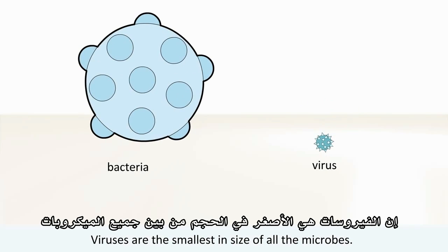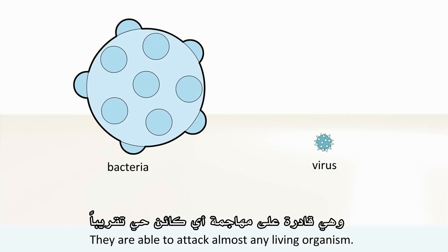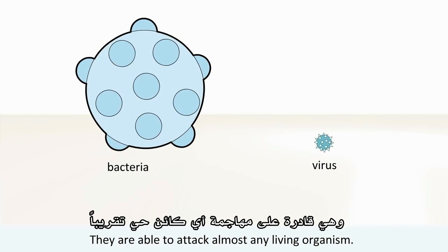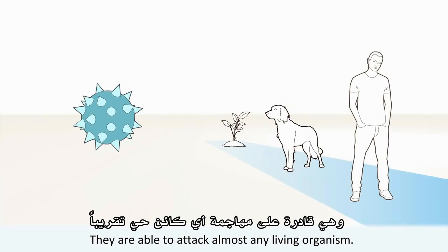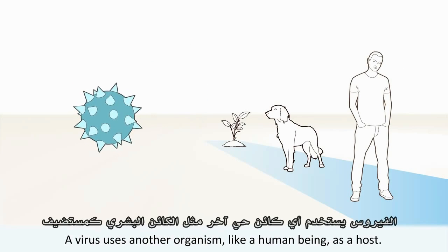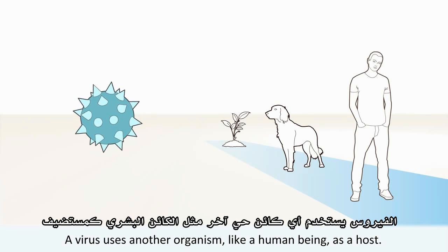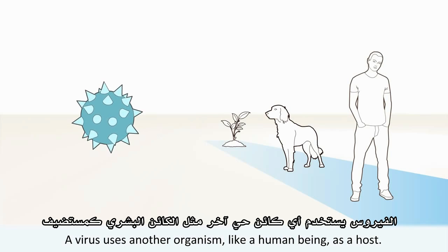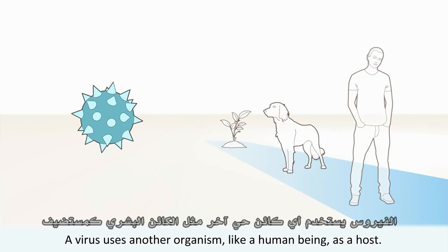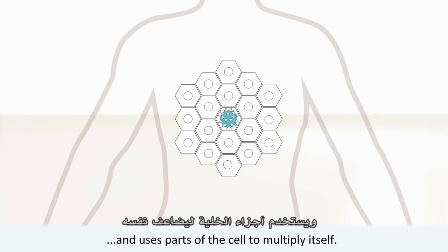Viruses are able to attack almost any living organism. A virus uses another organism, like a human being, as a host. It means that the virus invades a cell of the body and uses parts of the cell to multiply itself.